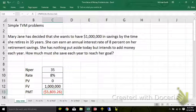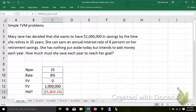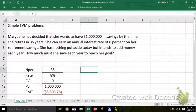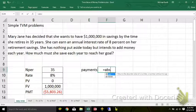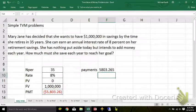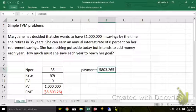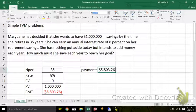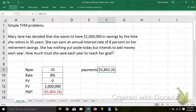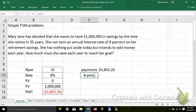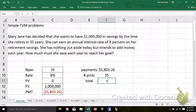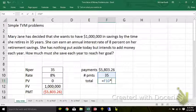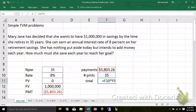Hit the go and the answer is, she needs to put away $5,803.26 each year. By the way, if she makes payments of $5,803.26 and makes 35 of them, then the total amount that she's going to contribute will be 35 payments of $5,800 and change each.